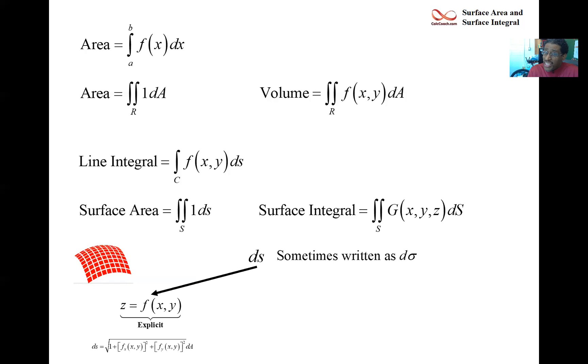The function could come at you in other ways though. The function could come at you as an implicitly defined function, where the x's, y's and z's are so intermingled and there's no way to solve for z as a function of x and y. And in that case then ds takes on a very different character. You have to take the gradient of f and we have to define a p which represents the normal to our surface.